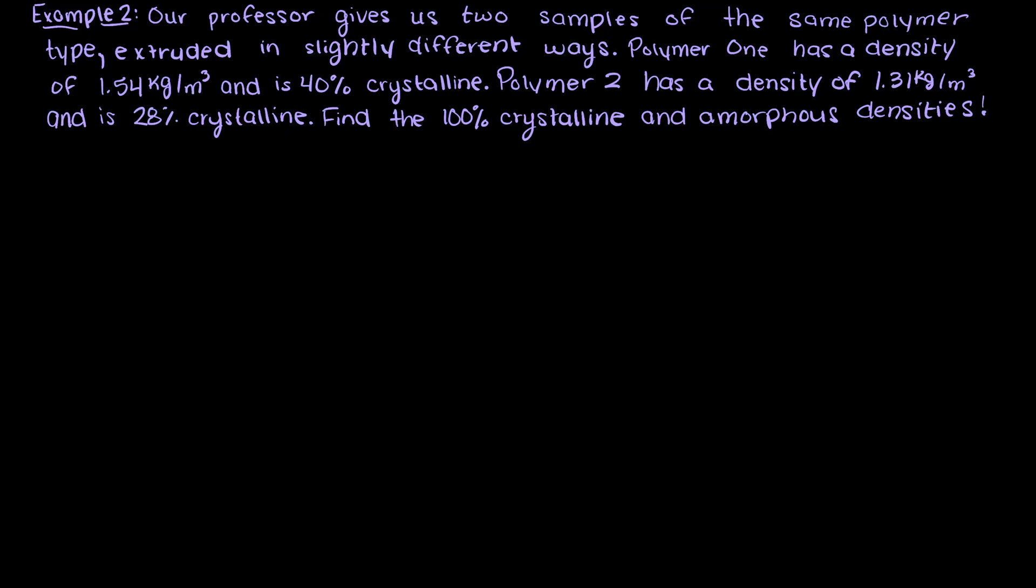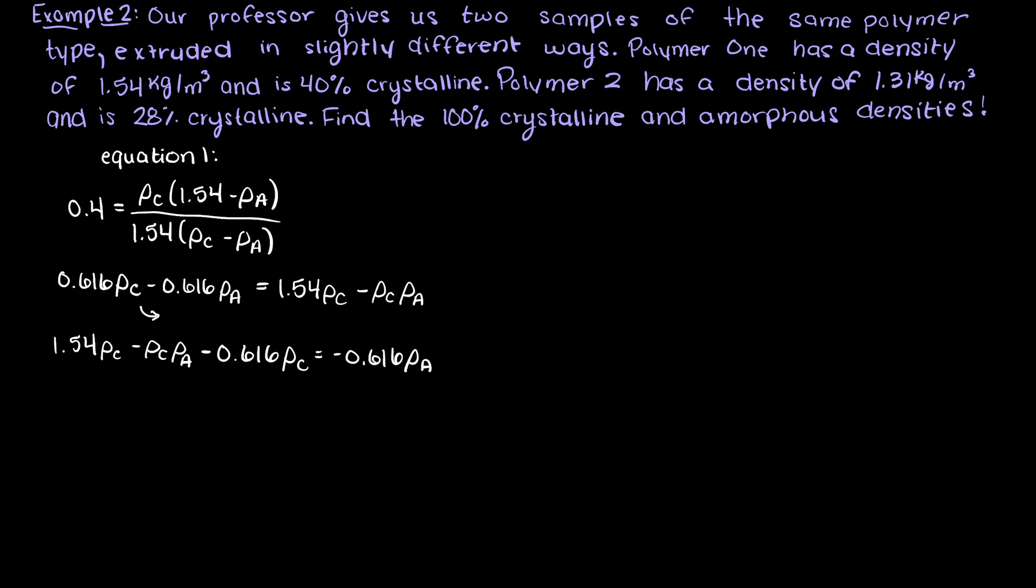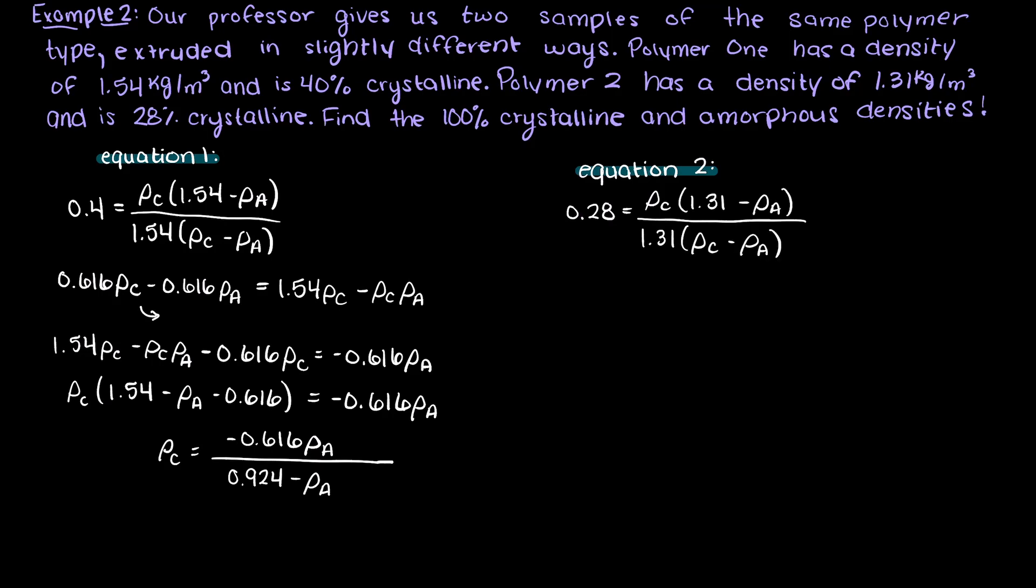We have two equations and two unknowns, therefore our degrees of freedom is zero, meaning that we can fully solve this equation. Let's begin with equation 1 and solve for one of our variables. It doesn't really matter which one you choose here so I will just pick 100% crystalline density. Let's rearrange this equation to get all the crystalline density variables on the same side to isolate it, and create an equation to solve for it. There we go, we now have an equation that we can plug into equation 2 and solve for the amorphous density.